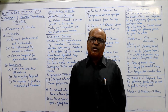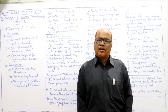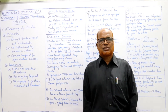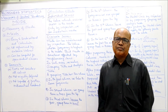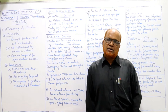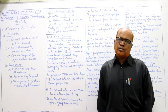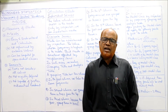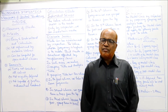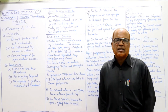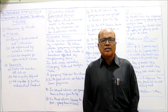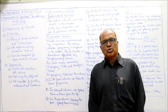Hello students, we'll start the next topic of business statistics. In the previous videos we discussed the different methods of measure of central tendency, which is the study of averages. An average is a single value which represents a mass of data. We discussed arithmetic mean and then median, which is the middle value dividing the series into two equal parts, along with their formulas and calculations.